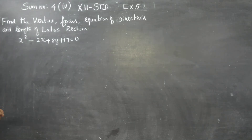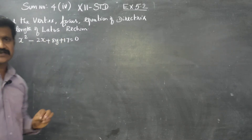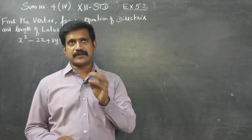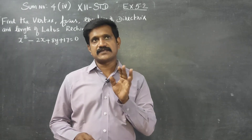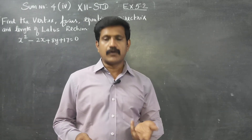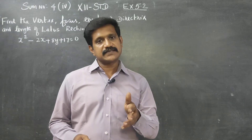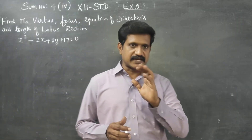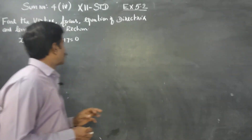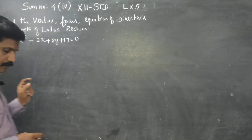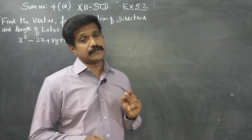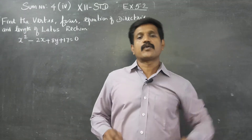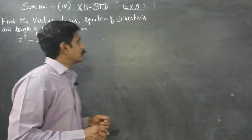First of all, this parabola equation is not in standard form. It must be of the type (x minus h) whole square or (y minus k) whole square equals some value. To get it into standard form, we will use the completing square method. Step number 1.